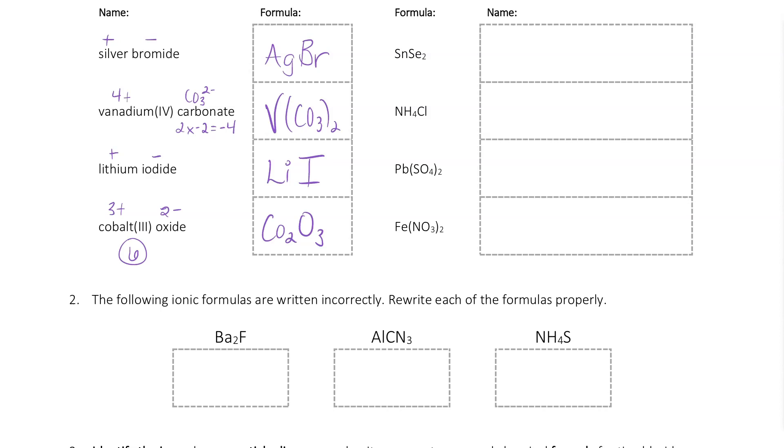When I'm looking at my formulas into my names, remember the end name of an element is always going to change to IDE. If you've got a polyatomic ion, we're going to name it as is. If you've got a transition metal that can have more than one possible charge, like our tin does here,